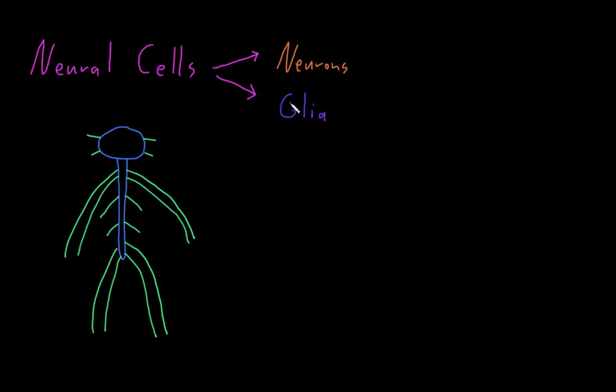Most neurons and glia found in the central nervous system are derived from neural stem cells, while most neurons and glia found in the peripheral nervous system are derived from neural crest cells. We'll go into a lot more detail about neural stem cells and neural crest cells in other videos when we cover development of the nervous system.